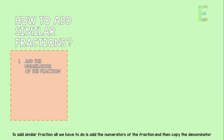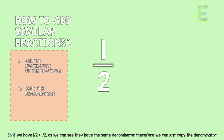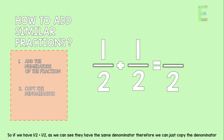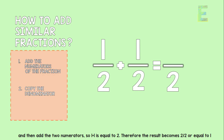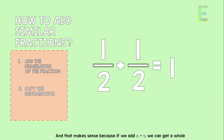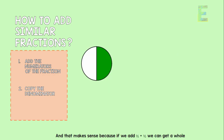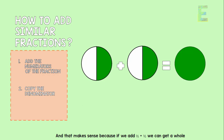To add similar fractions, all we have to do is add the numerators of the fractions and then copy the denominator. So if we have 1 half plus 1 half — they have the same denominator, so we copy the denominator and add the two numerators. 1 plus 1 is equal to 2, therefore the result becomes 2 over 2, which is equal to 1.